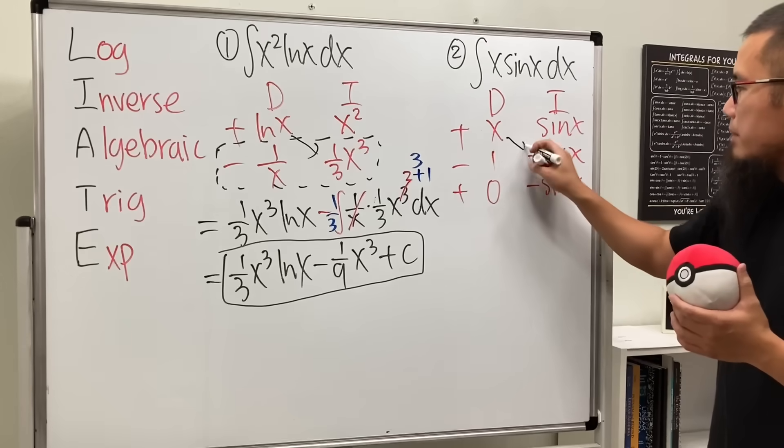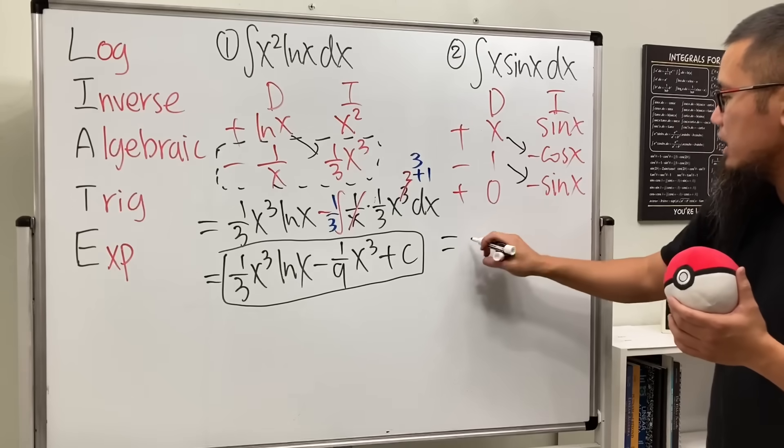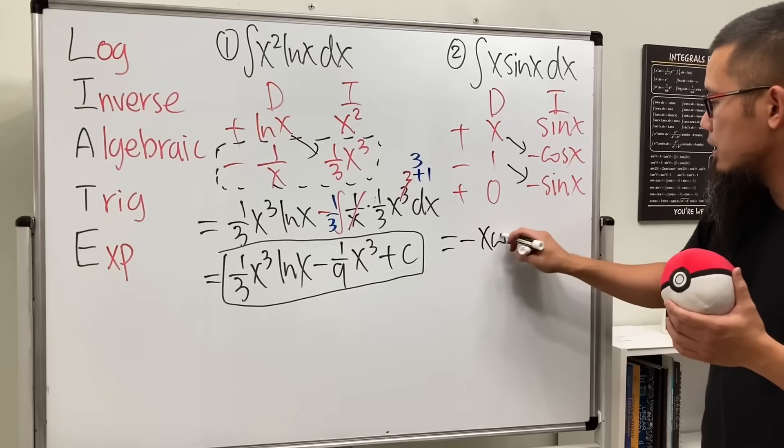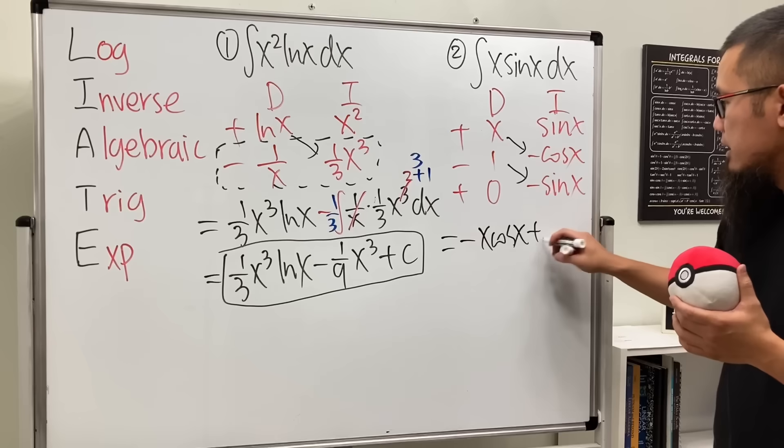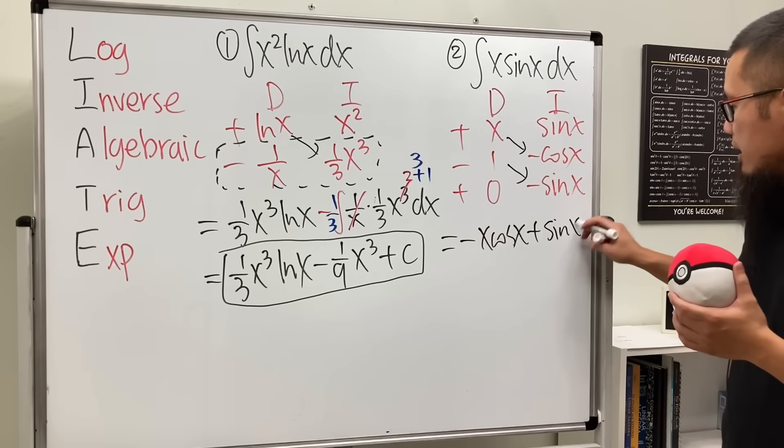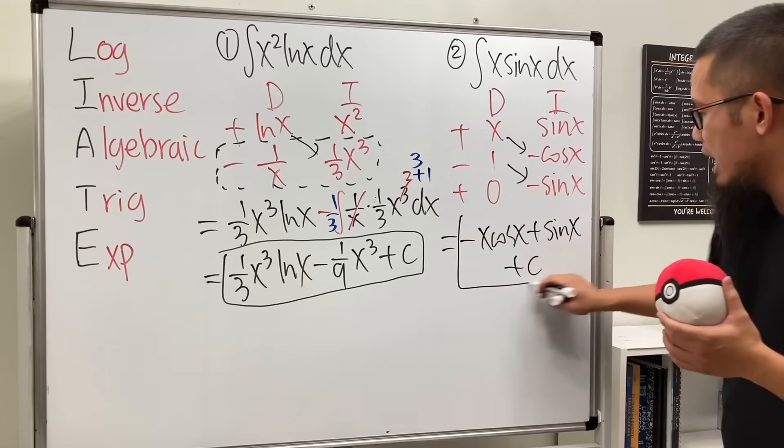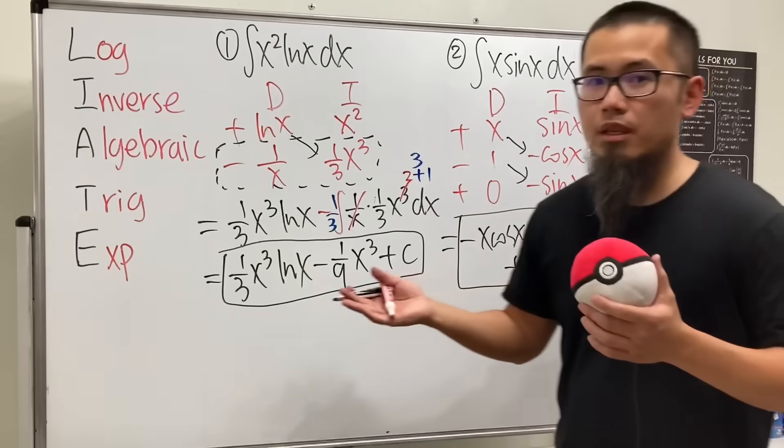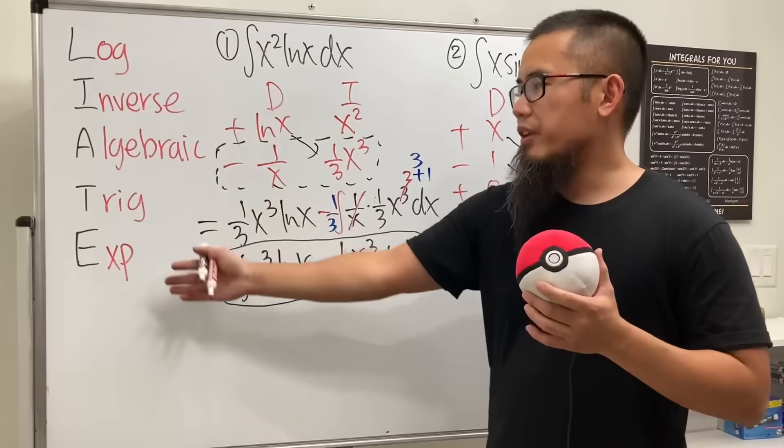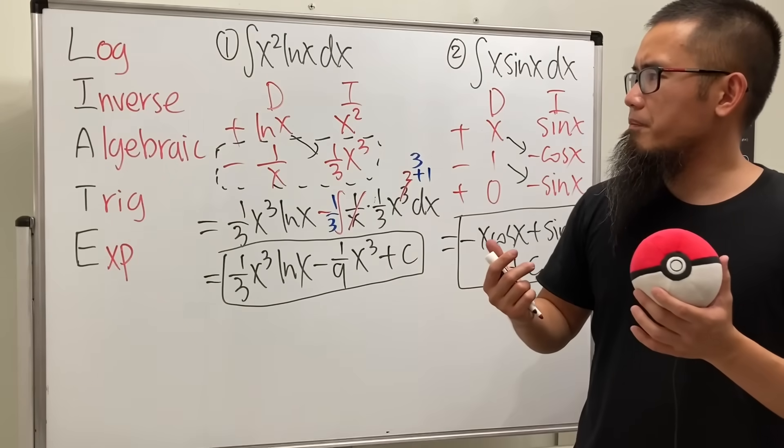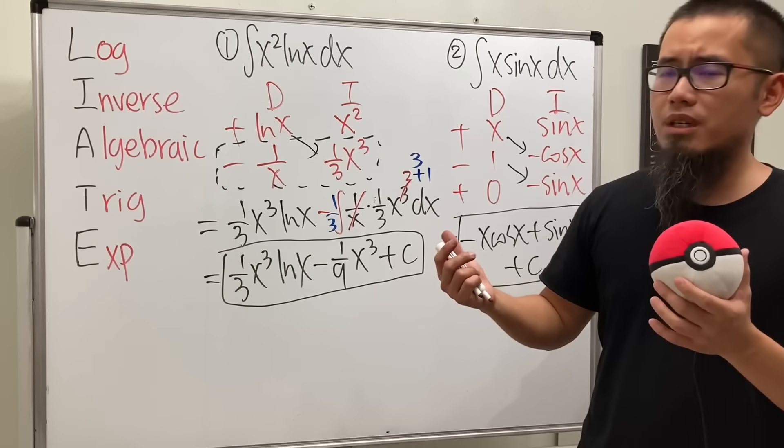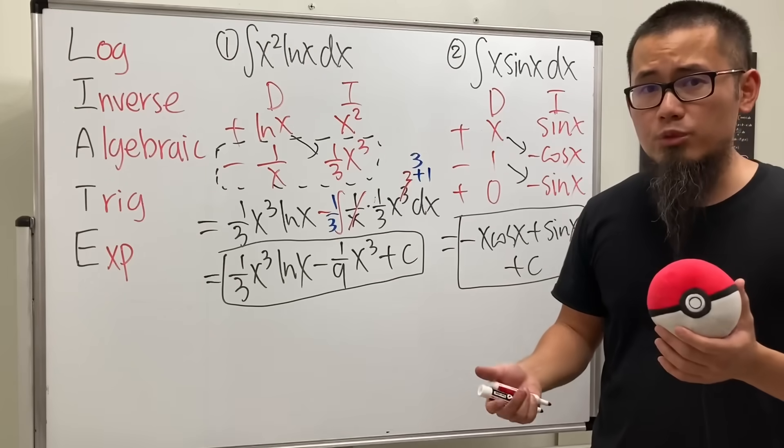Ladies and gentlemen, this times this, this times this is the answer, right? So we get negative x cosine x, and then plus sine x. Then DI also put down the plus C right here. Again, everybody happy. So it seems like this right here is actually a very good tip for us to remember and help us with integration by parts.